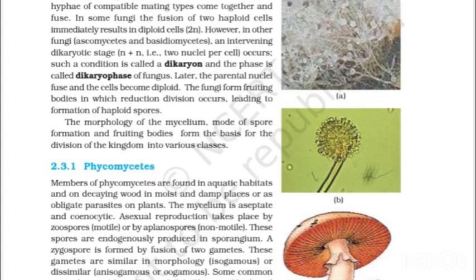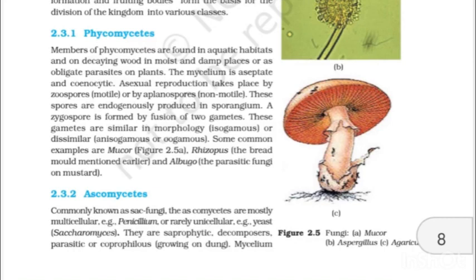2.3.1 Phycomycetes. Members of Phycomycetes are found in aquatic habitats and on decaying wood in moist and damp places, or as obligate parasites on plants. The mycelium is aseptate and coenocytic. Asexual reproduction takes place by zoospores (motile) or by aplanospores (non-motile). These spores are endogenously produced in a sporangium. A zygospore is formed by fusion of two gametes. These gametes are similar in morphology — isogamous — or dissimilar — anisogamous or oogamous. Some common examples are Mucor, Rhizopus — the bread mold — and Albugo — the parasitic fungi on mustard.